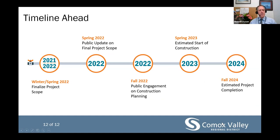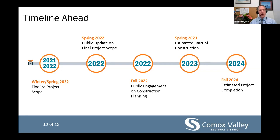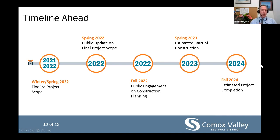Finally, the timeline ahead: in 2022 it will be a busy year for preparation, including a general public update on the liquid waste management plan and the conveyance project scope, as well as engagement on construction planning. Construction is estimated to start in the spring of 2023 and be complete in the fall of 2024, with the exception of some pre-digging that may occur this year on IR Number One. We look forward to keeping you informed moving forward, and I encourage you to continue your engagement with this project and take the opportunity tonight to ask your questions. Thank you for your time.